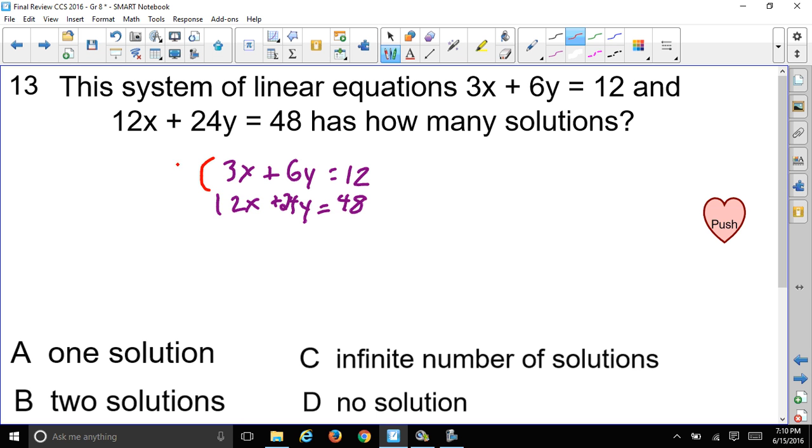So if I multiply this top equation by 4, distribute, I'll get 12x. Multiply this by 4, I get plus 24y. So I got 24y. And multiply the 4 times the 12, that'll equal 48. And that's the same equation as this one down here.